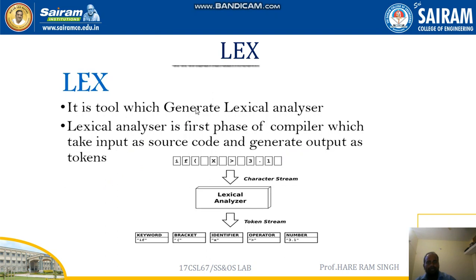We can understand this simply with an example. Suppose we have a C programming statement: if x is greater than 3.1. This is a language program statement. Now, what will lex do? It will generate a lexical analyzer, and that lexical analyzer will create tokens for each word. In this statement, the first token is the keyword 'if'.